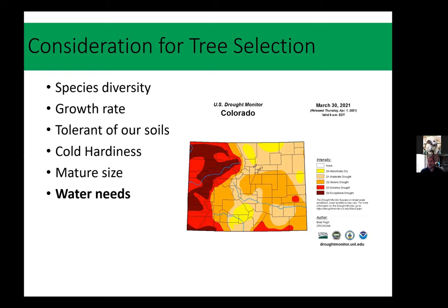A big thing we all need to think about is water needs. We live in a dry place — some years drier than others. This March 30th drought map shows the whole state is in some sort of drought, with most of the Front Range in moderate to severe drought. This is nothing new; we go through dry periods. Our changing climate will likely lead to more peaks and valleys in our moisture levels. So pick something that can tolerate dry conditions when you have the choice.